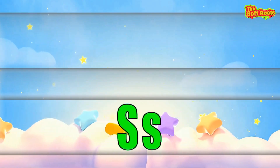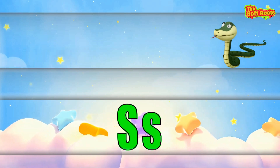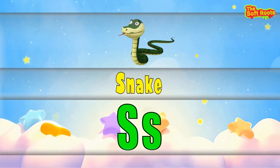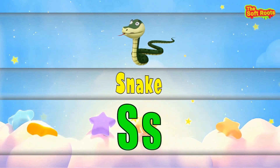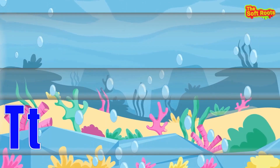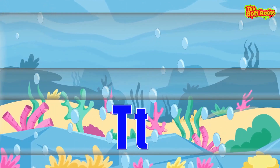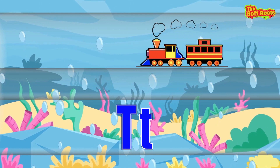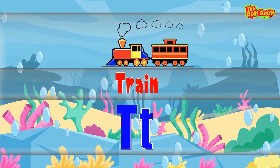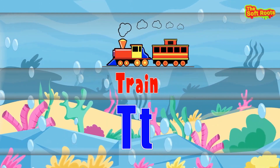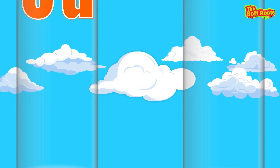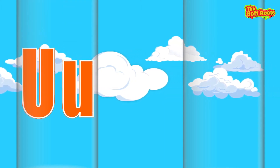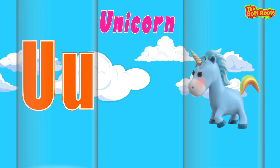S is for Snake, Snake, Snake. T is for Train, Train, Train. U is for Unicorn, Unicorn.